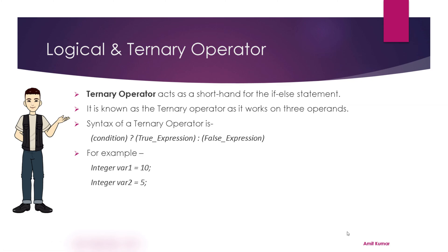For example, if there are two integer variables var1 and var2 with values 10 and 5, and we want to find out the larger of the two numbers, we can use the ternary operator. We write: var1 > var2 ? var1 : var2, and the result is stored in a variable called larger. The larger variable will hold the value of var1 if var1 is greater than var2, otherwise it will hold the value of var2.